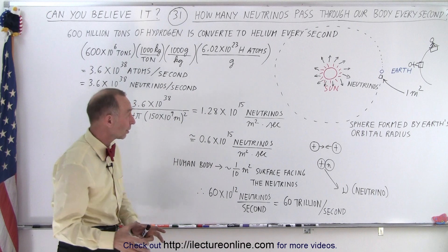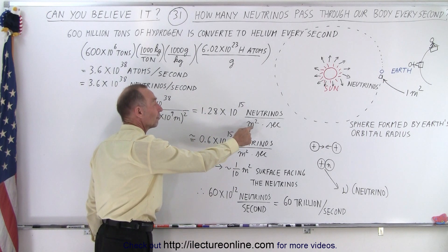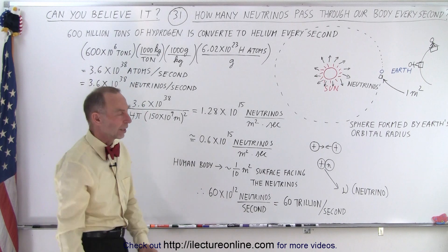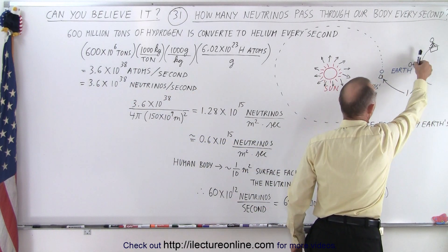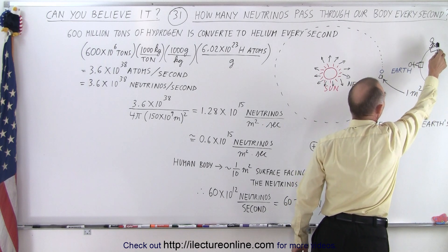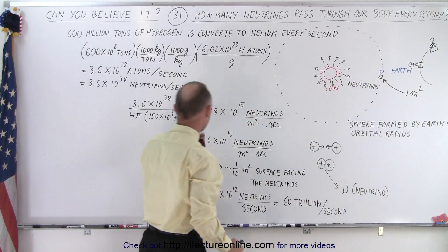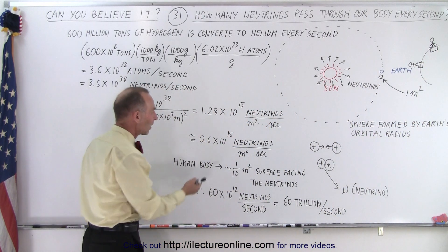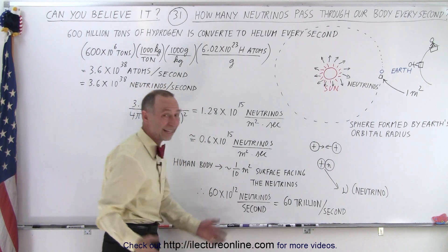And when we do that, so this is 150 billion meters from here to the Sun, we square that distance times 4 pi—4 pi r squared is the surface area of a sphere. We end up with 1.28 times 10^15 neutrinos. Now, 10^12 is trillion, so that's 128 trillion neutrinos for every square meter per second. Now, of course, not all of the surface of the Earth is pointed directly towards the Sun. You could be kind of at an angle right up here at a higher latitude. And so let's just on average divide that by 2. And so let's say it's about 600 trillion neutrinos per square meter per second that hit the Earth.